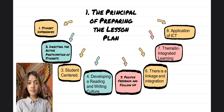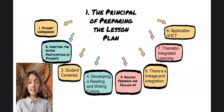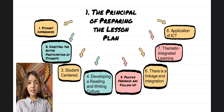The first principle: each student has individual differences and is unique. For example, each student or learner has initial abilities, intellectual level, talents, potential, interest, motivation to learn, social abilities, emotion, learning style, and special needs.